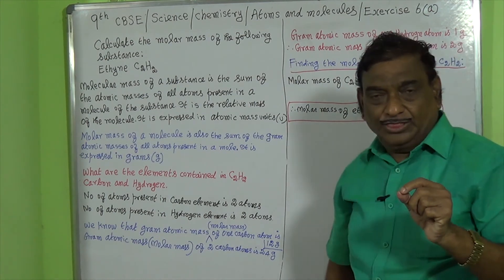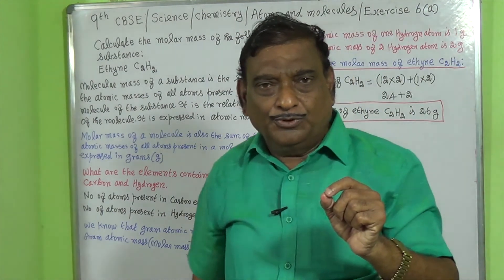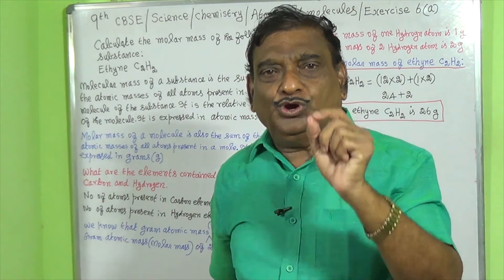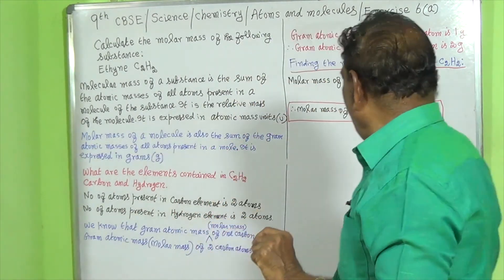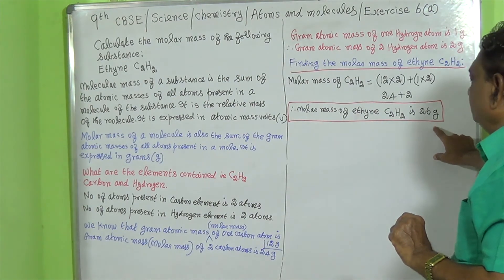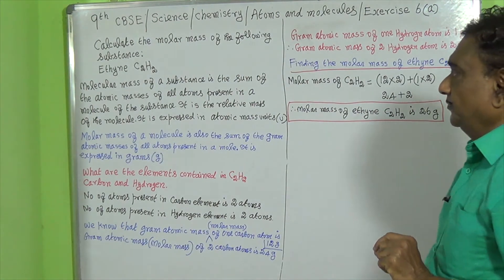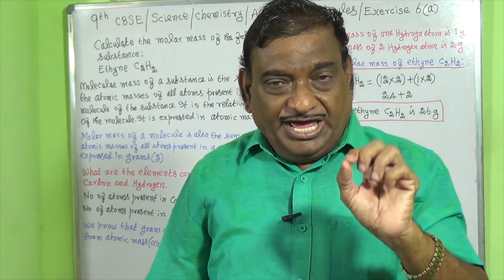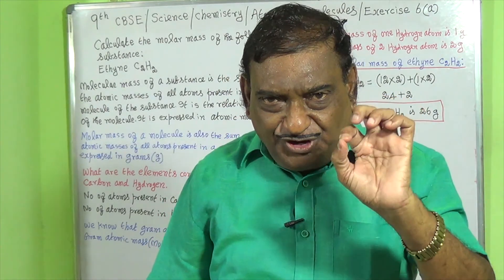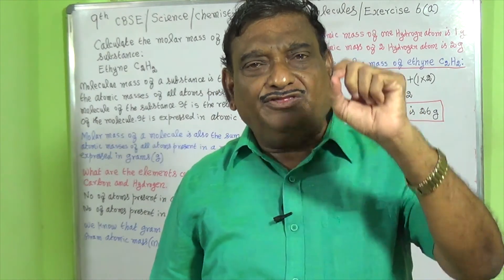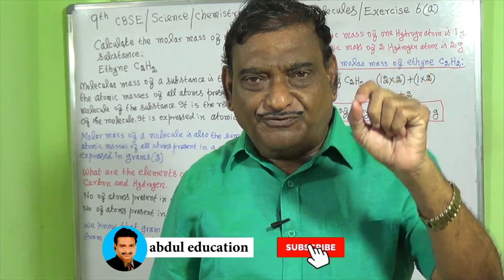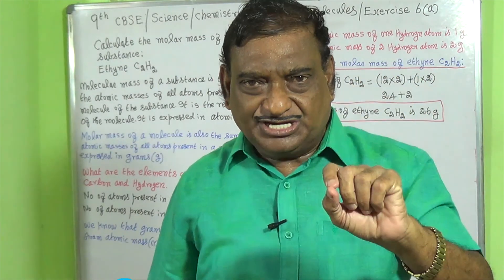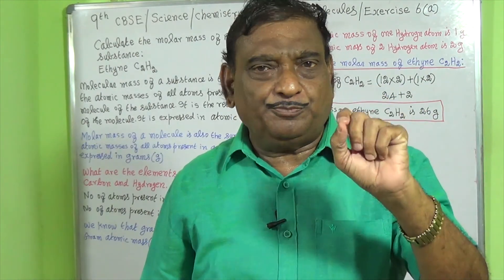Therefore, the molar mass of ethyne, that is C2H2, is 26 gram. My dear students, if this video is really beneficial to you, you can share this video with your friends, relatives and classmates. You can also subscribe to my channel.